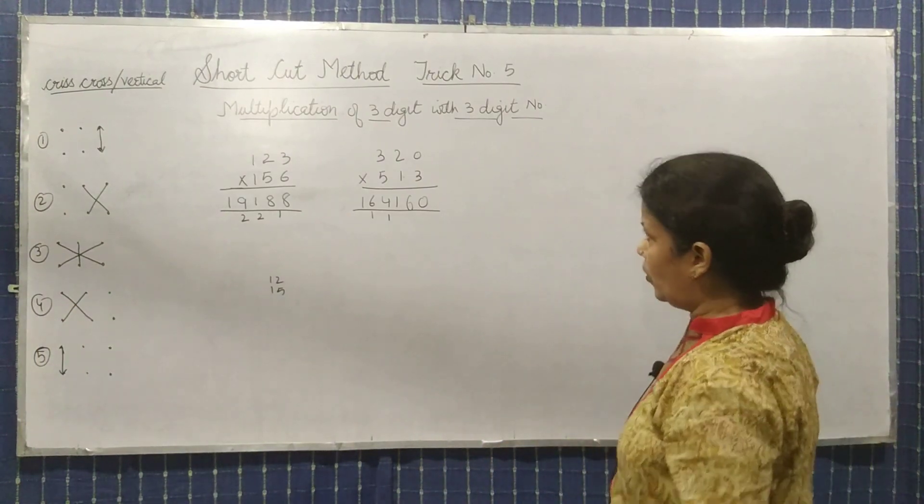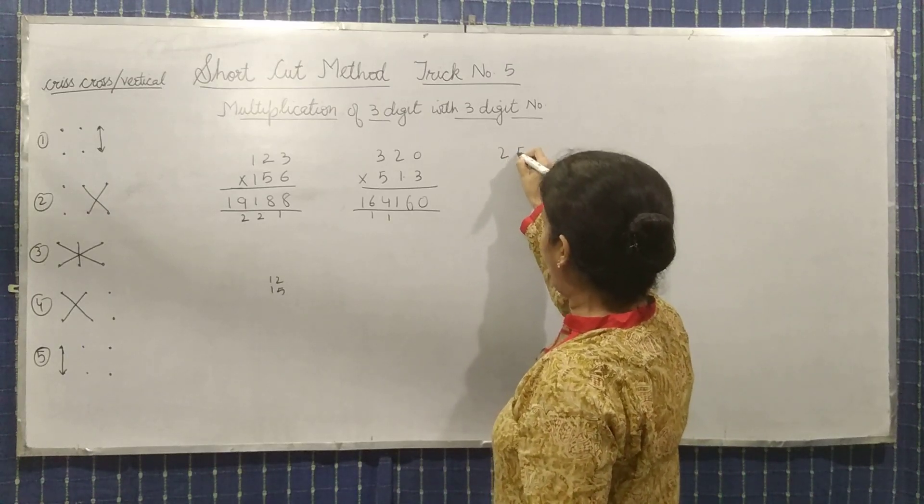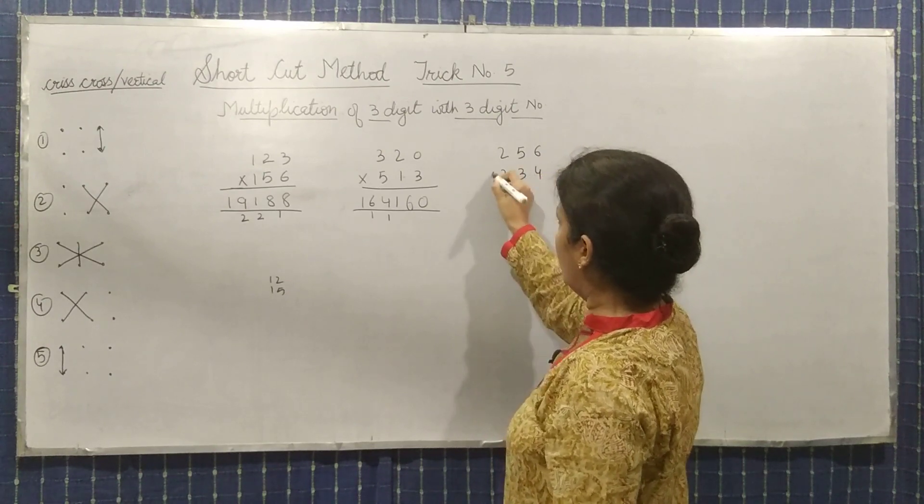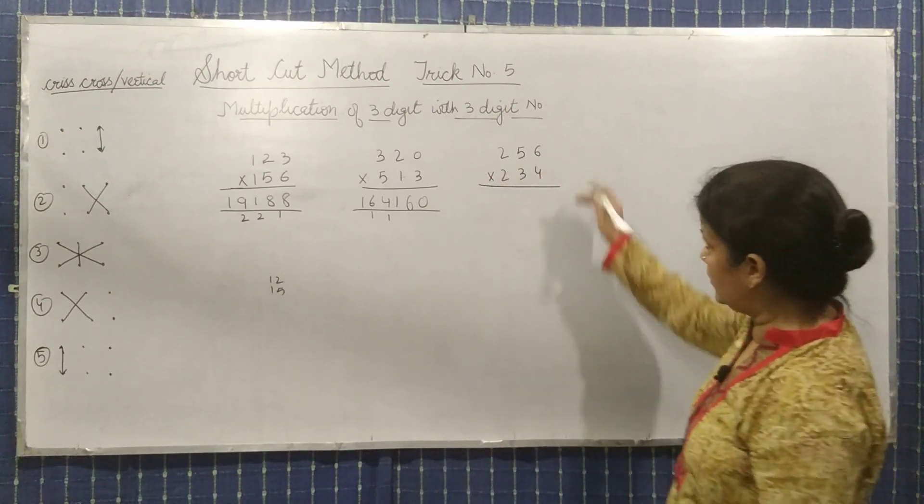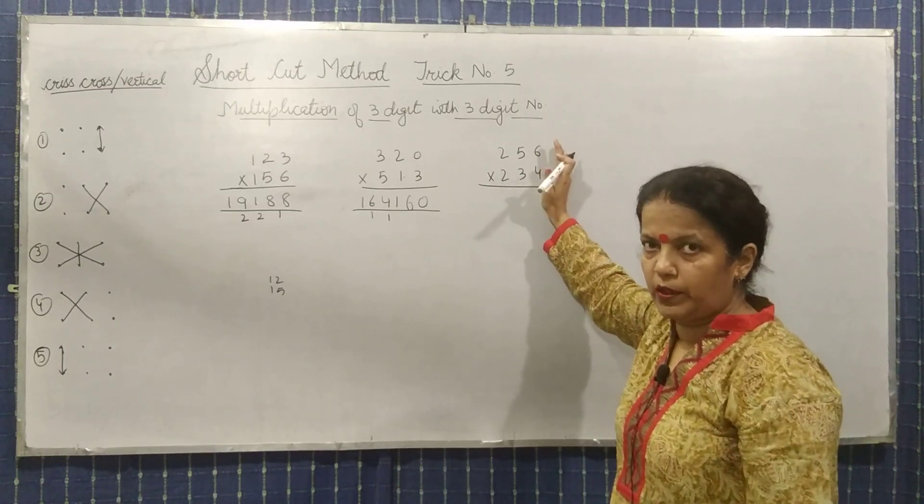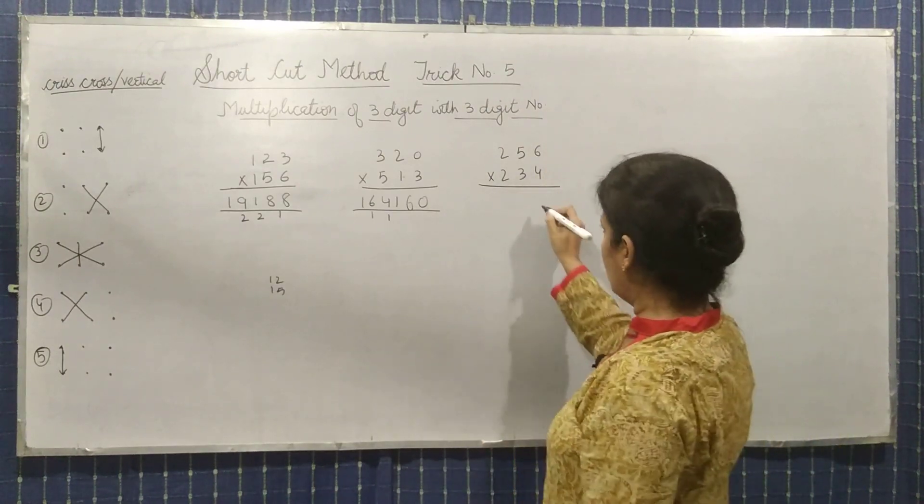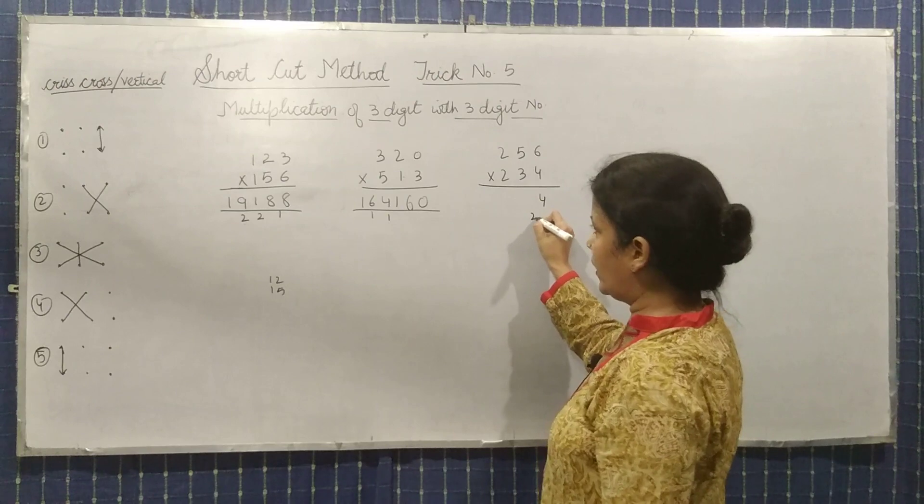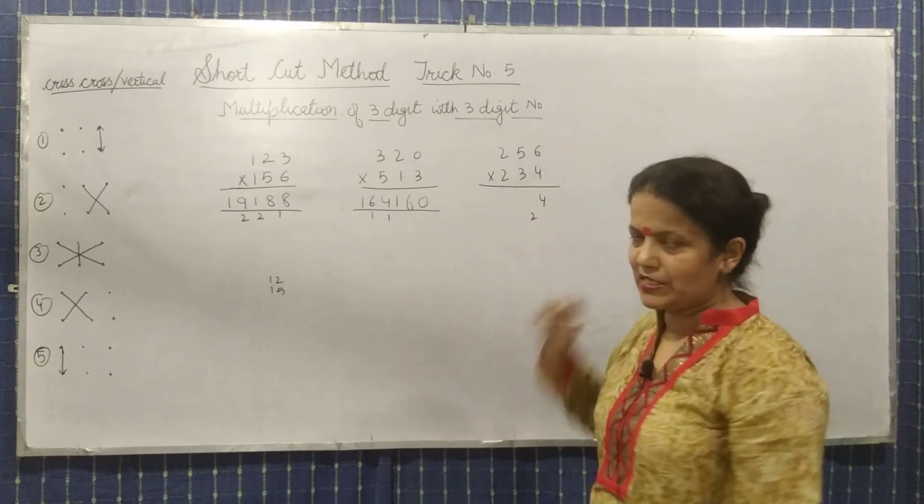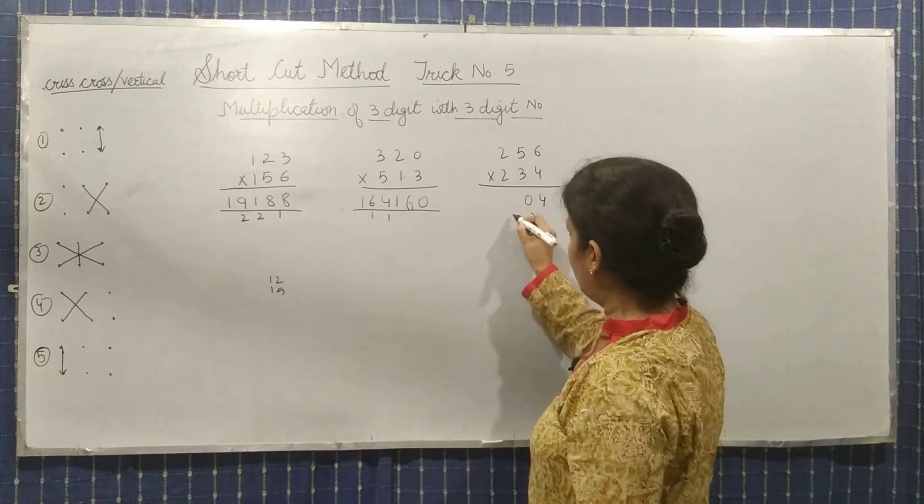Take one more. Two, five, six. Two, three, four. Multiply it. Again multiply vertically from this side. Multiply vertically, it will be twenty-four. So four and two carry. Multiply these two: twenty plus eighteen is thirty-eight, plus two is forty, four carry.